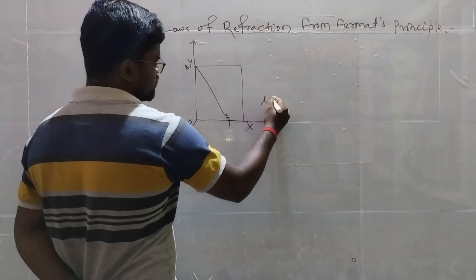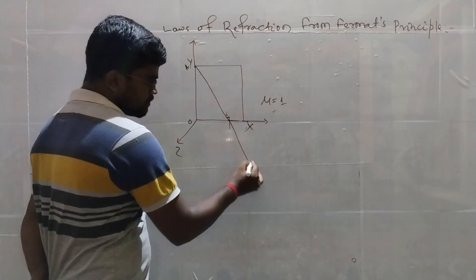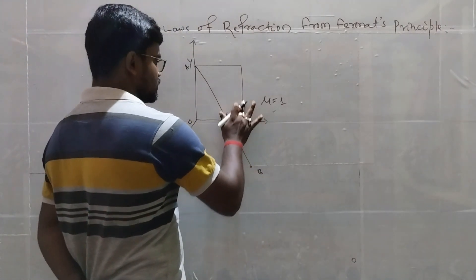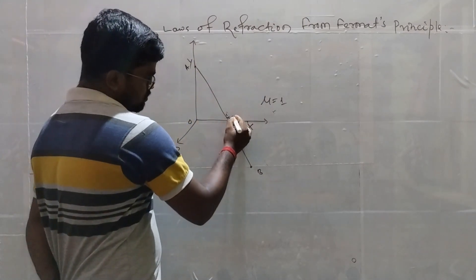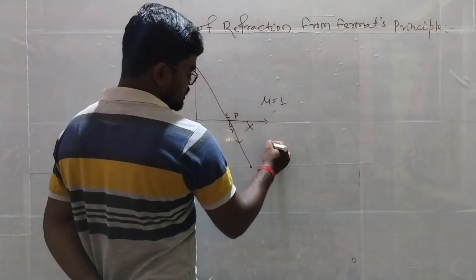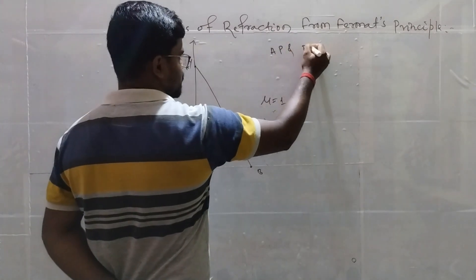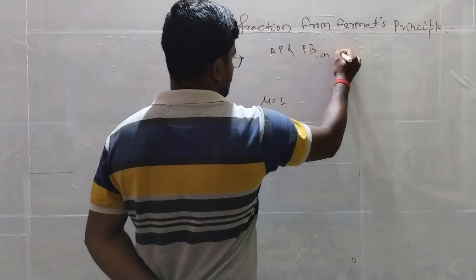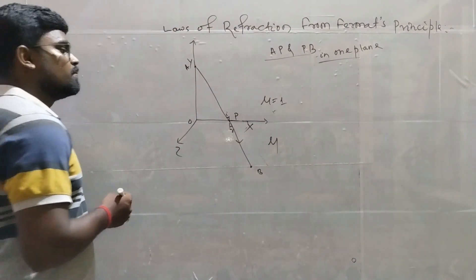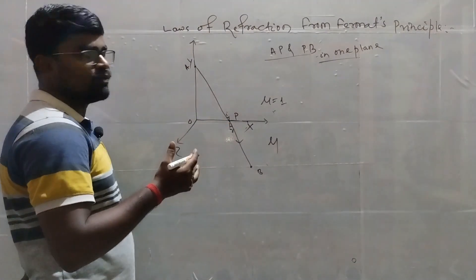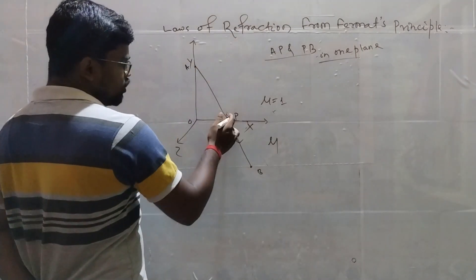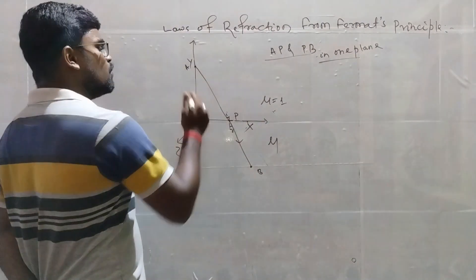Let mu1 equal to 1 here, and another medium will have refractive index mu2. This point is B. Now we have to prove that the incident ray FP and the refracted ray PB are in one plane. We have to just verify whether this is true or not. So I am taking that this point P' is not in the XY plane — P' is in the ZX plane.